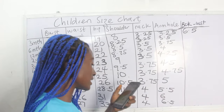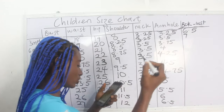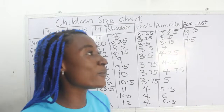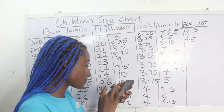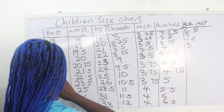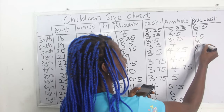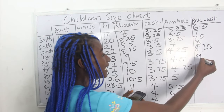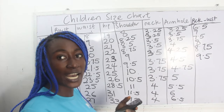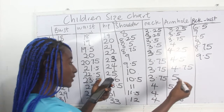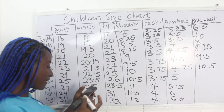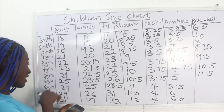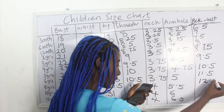For three months: back-to-waist (shoulder to waist) is 6.5 inches. For six months: 7 inches. For 12 months (one year): 7.5 inches. For two years: 8 inches. For three years: 8.75 inches. For four years: 9.5 inches. For five years: 10.5 inches. For six years: 11.5 inches.